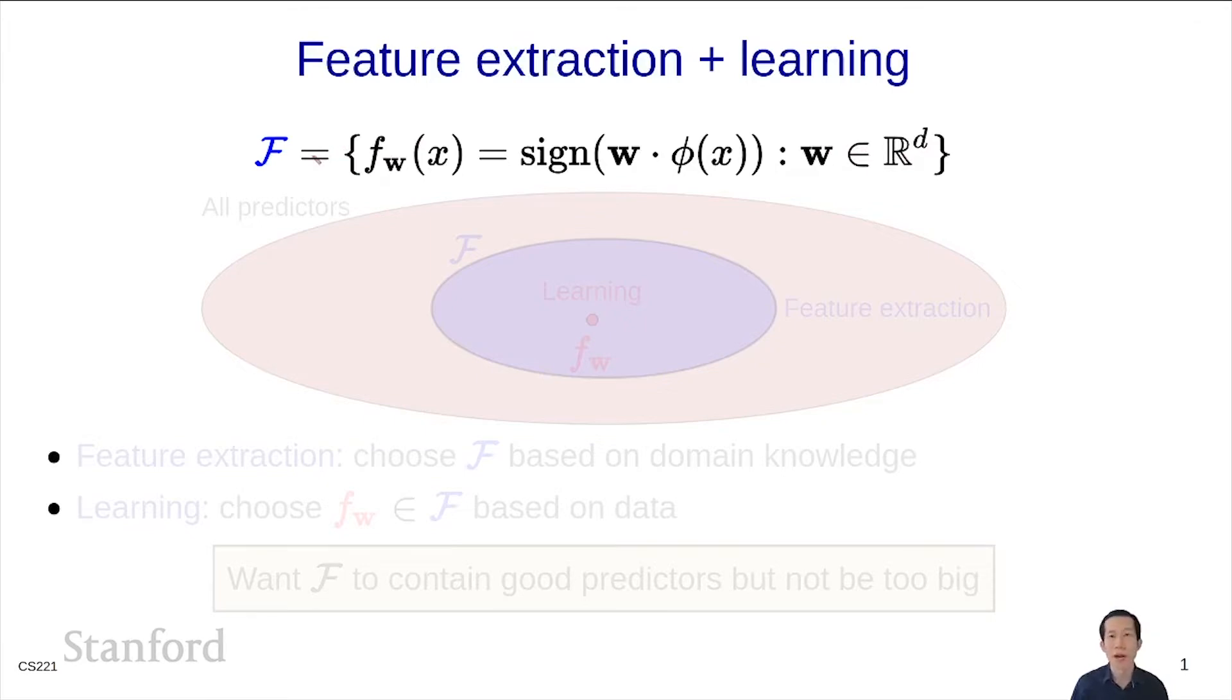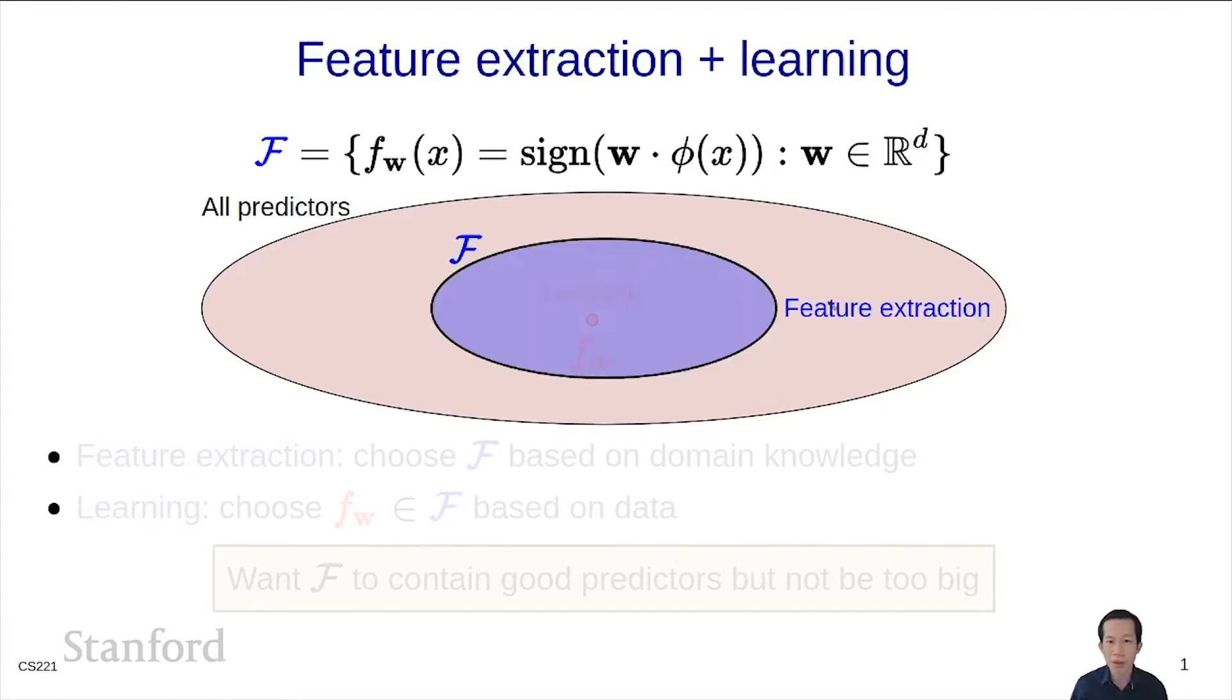We can visualize the hypothesis class as follows. Imagine the space of all possible predictors, all possible functions mapping x to y. When you define a feature extractor phi, what you're doing is committing to a particular subset of all possible predictors. Usually you do this by using prior knowledge. The second part is the learning algorithm, where you're given script F, the hypothesis class, and you're asking the learning algorithm to choose a particular predictor from that set based on data.